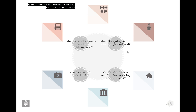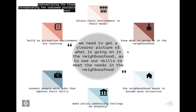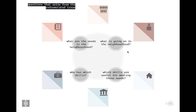A number of questions arise from the reformulated issue — what are the needs in the neighborhood, what is going on, which skills are useful for meeting those needs, and who has those skills? Many of these questions can already be partially answered. In this case, our partner, the Gletcher, was embedded in the community and already knew the needs, including the issue around lighting.